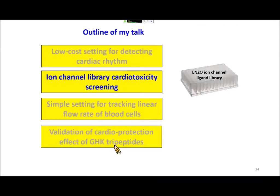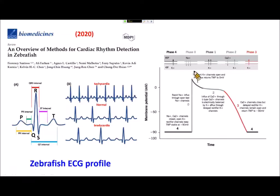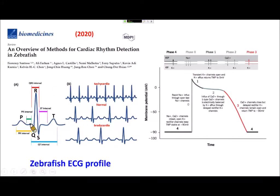After establishing this method, we wanted to screen some chemical libraries — for example, an ion channel library. What is the cardiac signal? The zebrafish ECG is very similar to human ECG. We have four major signal peaks, called PQRST, and each interval contains useful information. For example, the normal signal looks like this; if the heartbeat is faster we call it tachycardia; if slower we call it bradycardia.